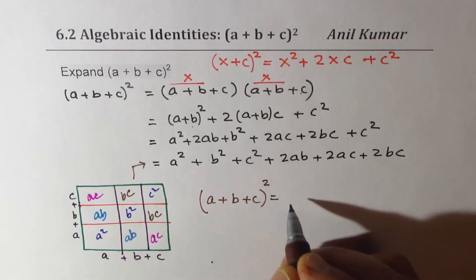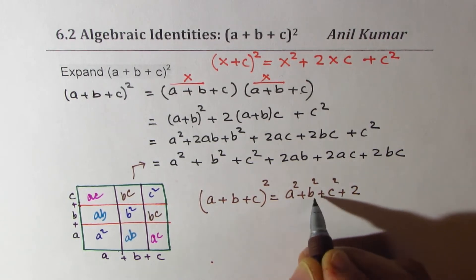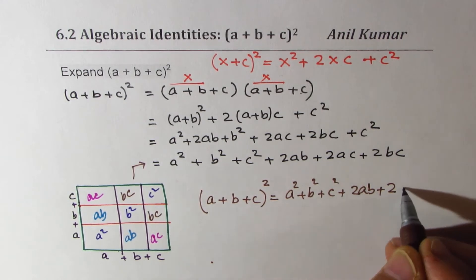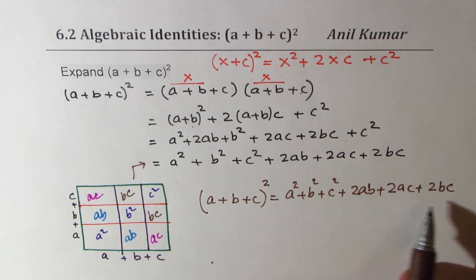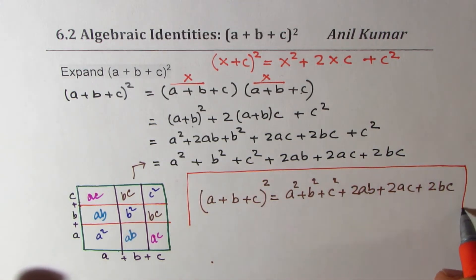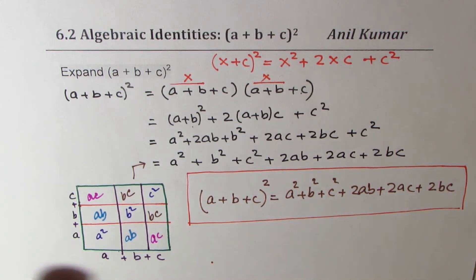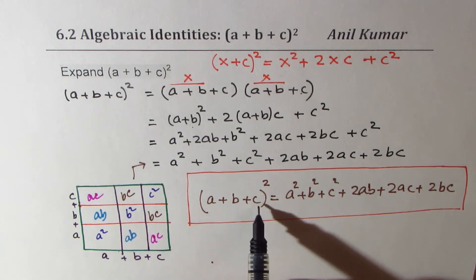So we confirm that (a+b+c)² = a² + b² + c² + 2ab + 2ac + 2bc. You can change the order, but it's always two times each cross-product. This is a very important formula — another identity to remember. Just pause the video, go through this, and understand how we derive this formula.